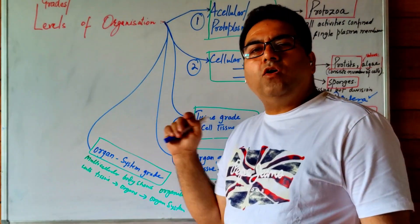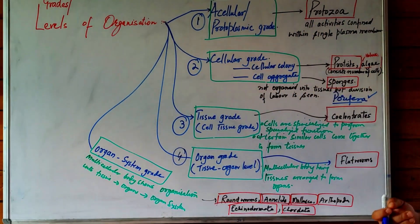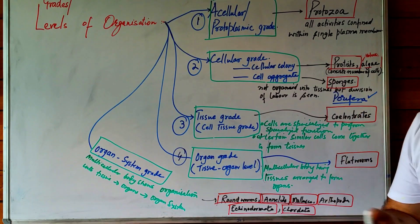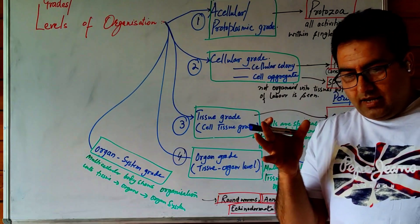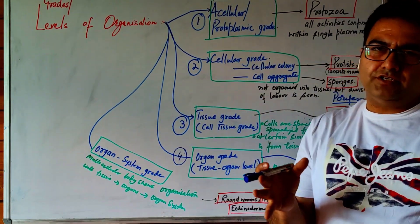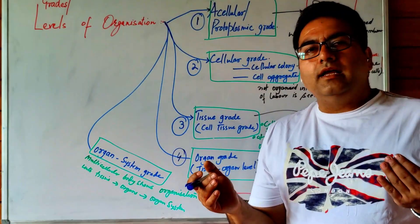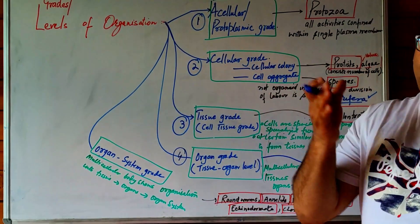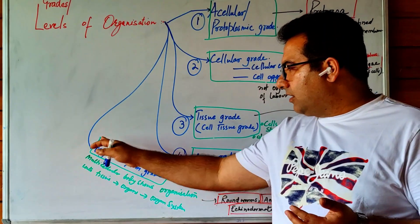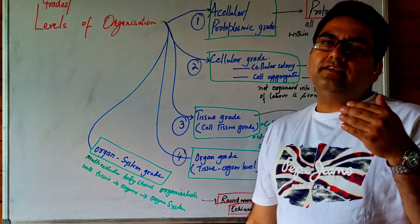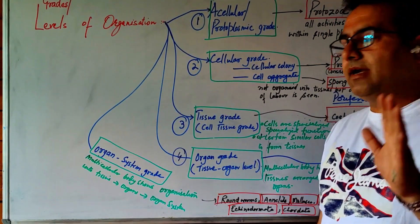The next is the organ system grade of organization. Multicellular organisms here show distinct organ systems: different organs performing similar functions are grouped together — for example, organs involved in excretion form the excretory system, and organs involved in digestion form the digestive system. This is the most advanced grade, seen in advanced invertebrates and all chordates.